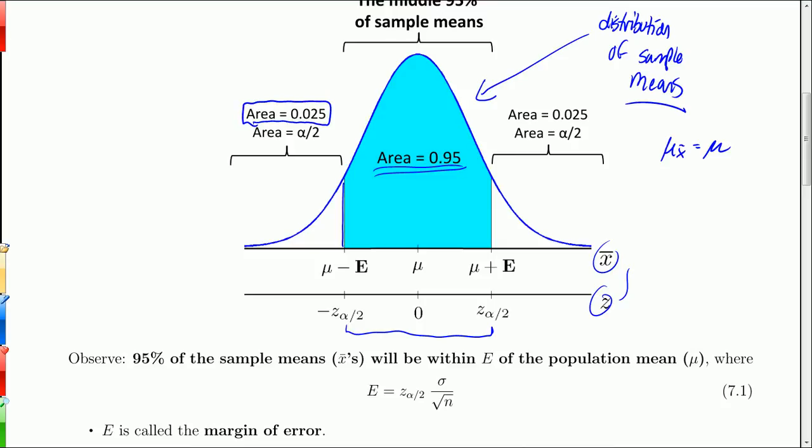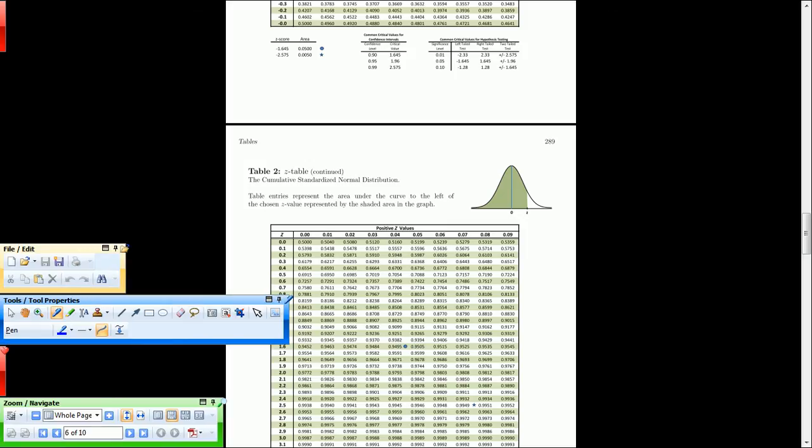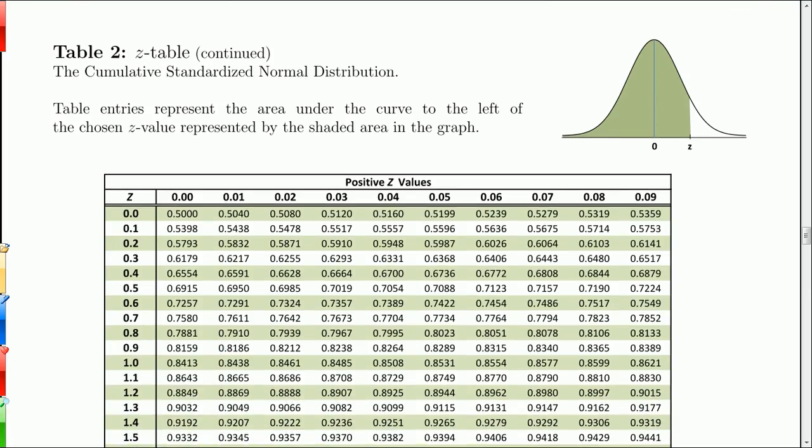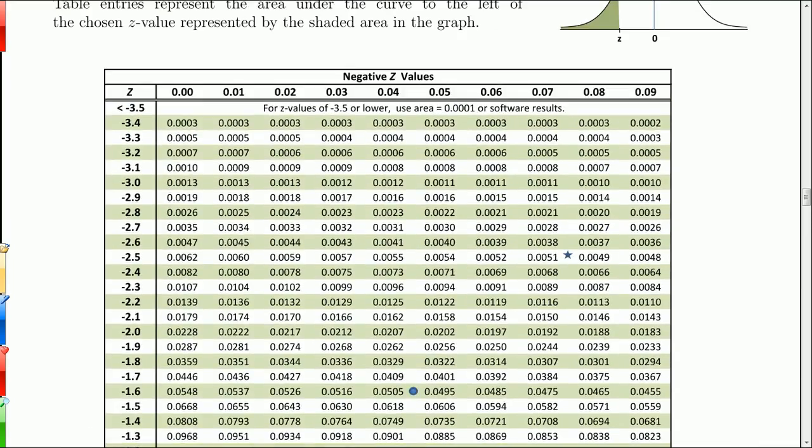But to get that value, I have to look at this area here. And this area here, since this is .95, this is going to be .025 in each tail. We're going to split the remaining .05 into the two tails. So if you take the .05 and split it in half, that gives us .025 in each tail. And so to find this, we'd have to go to our z table, for example. And if we did that, let me put this in full size as well.